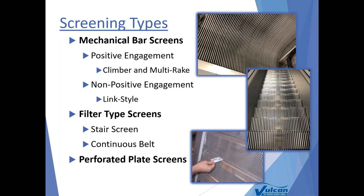To give a broad overview of different screening technologies, we'll focus on three categories: mechanical bar screening, filter type screens — a generic term that includes many technologies — and perforated plate screens. For mechanical bar screens, we at Vulcan use the terms positive engagement and non-positive engagement. For filter type screens, we'll talk about stair screens and continuous belt screens, such as Parks AquaGuard or similar rotating continuous belt technologies. And for perforated plate screens, there are many ways perforated plate can be used in screening technologies.